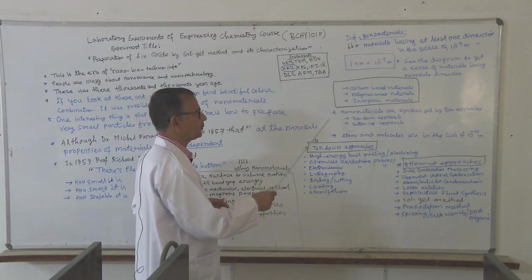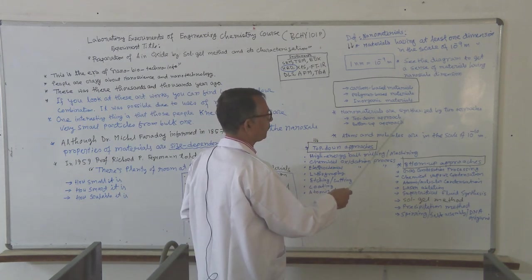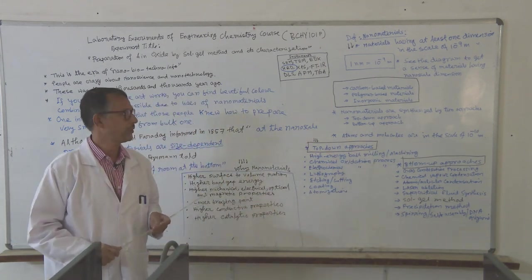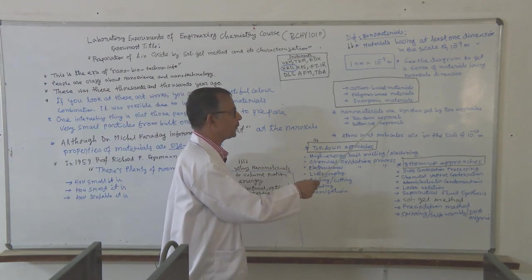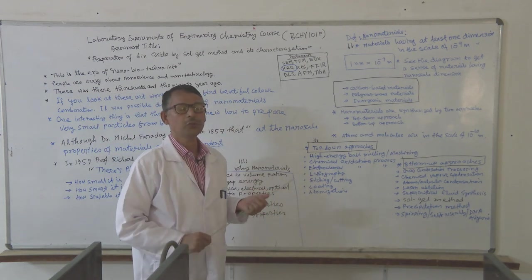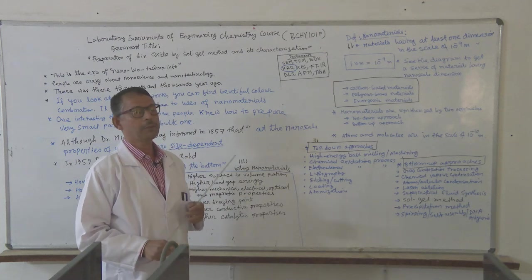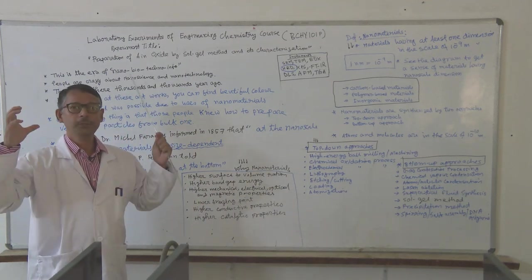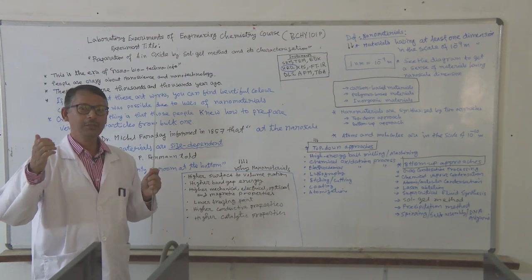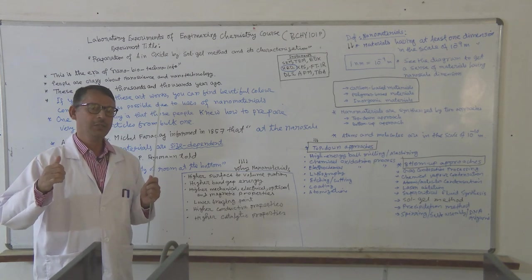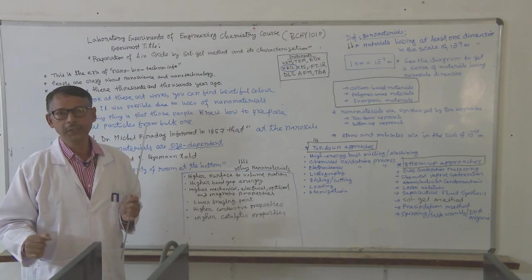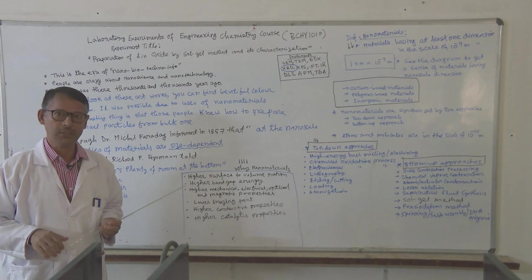There are basically two types of approaches for the synthesis of nanomaterials. One is top-down approach, another is bottom-up approach. Top-down approach means we are taking bulk materials and we are disintegrating, breaking or grinding to the smaller scale.